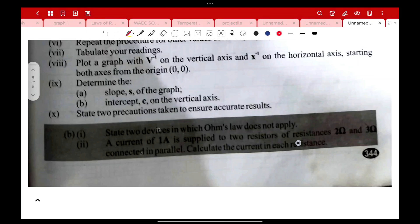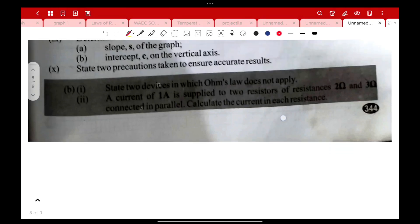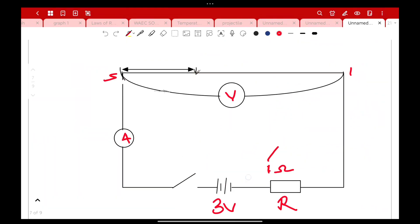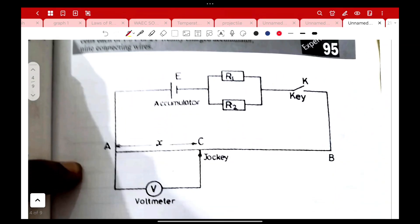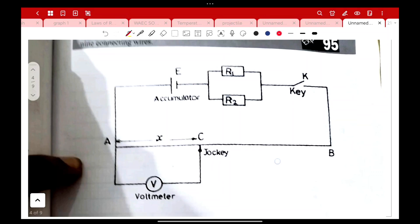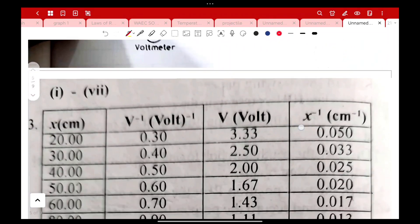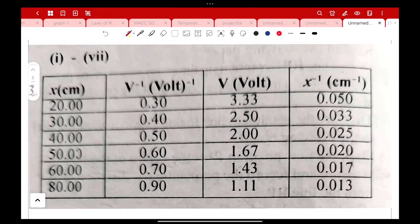Let's look at the circuit diagram again and look at the parallel connections of the resistors. You see R1 and R2 connected in parallel. This is how your table is meant to look like. Your x is to be recorded in centimeters: we have 20, 30, 40, 50, 60, and 80.